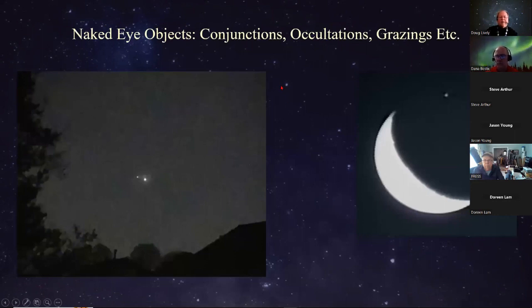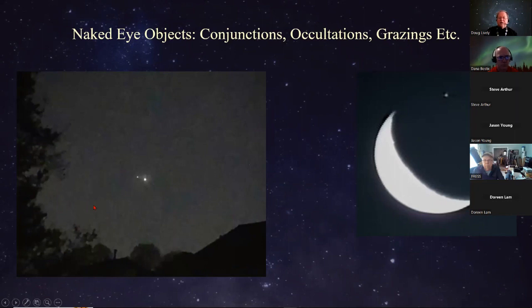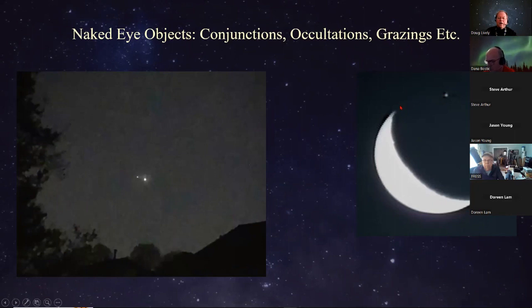As Dana mentioned earlier about conjunctions — this is the one that happened on March 1st, where Venus and Jupiter were really close together in the night sky. They were only about half a degree apart. These conjunctions happen periodically — maybe not every year, but once every couple of years we get a really interesting pairing. They appear to be close but they're actually millions of miles apart, so there's no danger of collision. Also here on the right is an example of what we call a grazing occultation — every now and then, the moon actually skirts past a star.